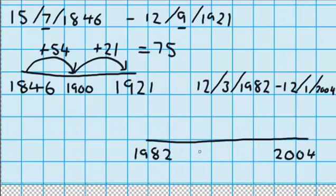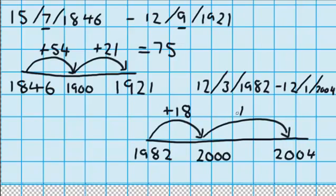And I'm going to do my first jump to take me up to 2000. So I think, what jump will take me from 1982 up to 2000? The answer is 18. And you can see it's really easy for me to then go from 2000 up to 2004. That's a jump of 4 more years.